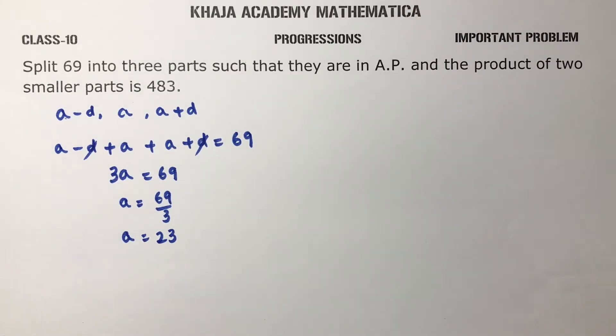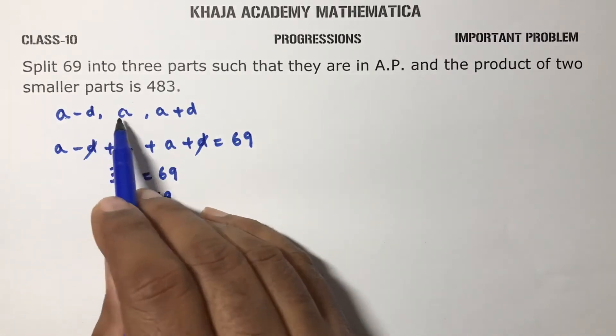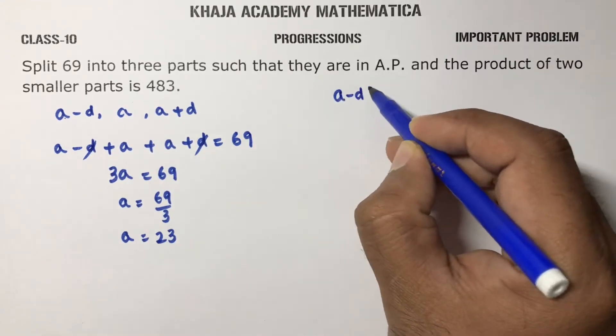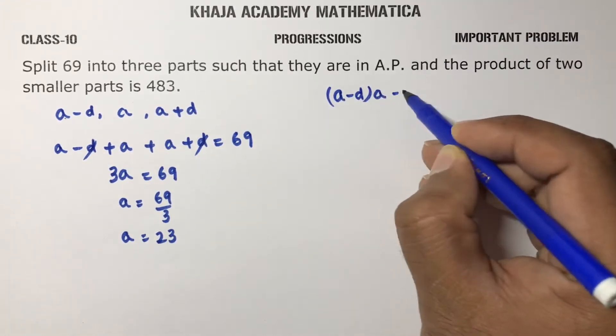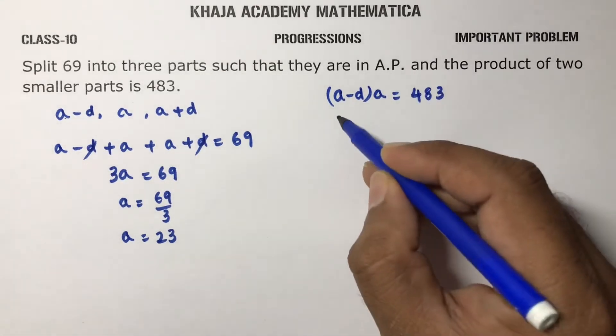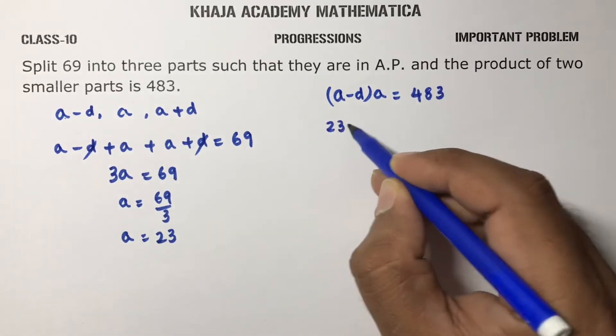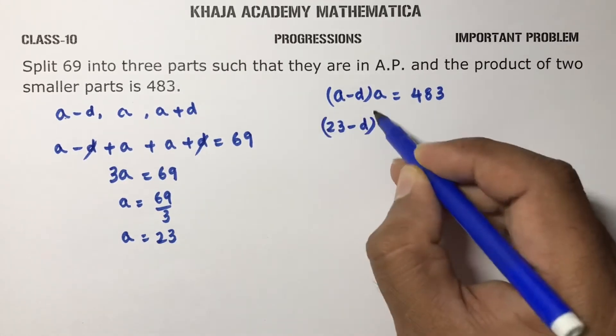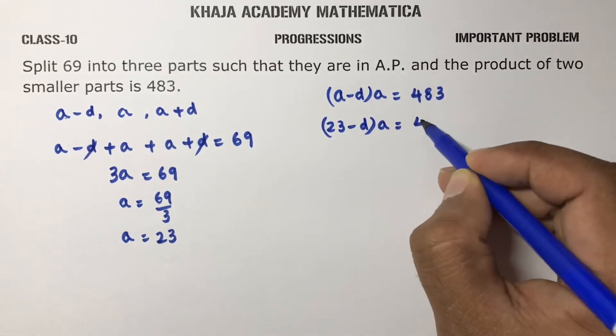They gave the product of two smaller parts is 483. Two smaller parts, these two are smaller parts, so a minus d into a is 483. So a value is 23 which you got here, minus d into a is 483.